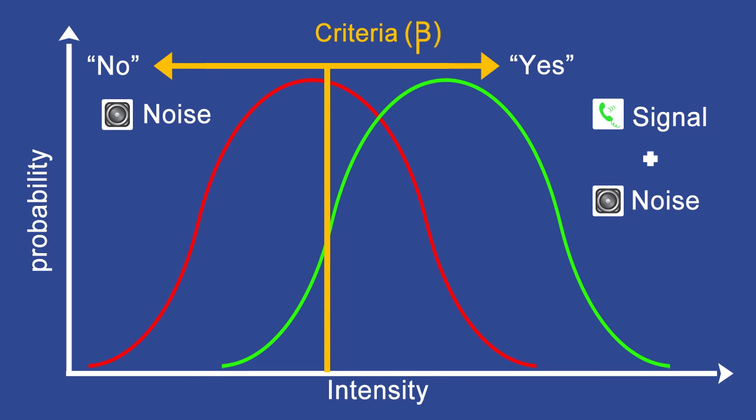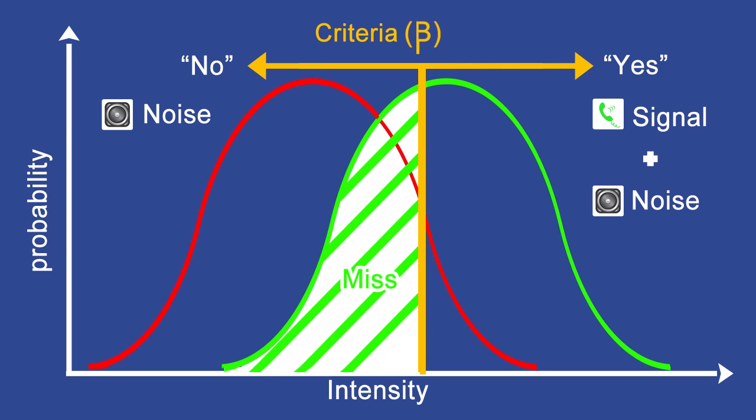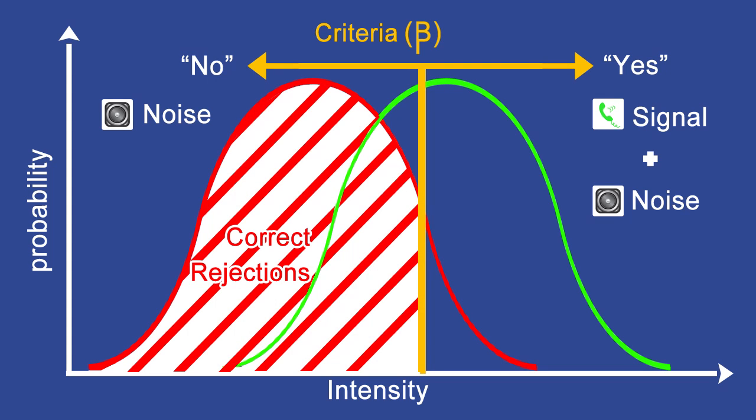She does not want to hear the sound. It reflects by beta moving to the right. We have more miss, more correct rejection, and less yes responses.